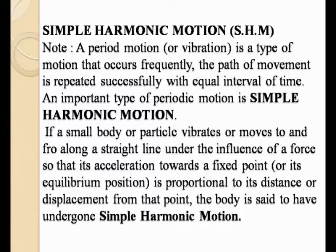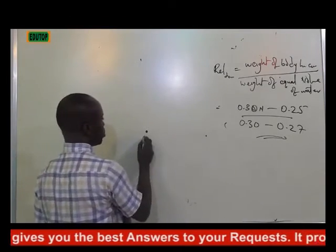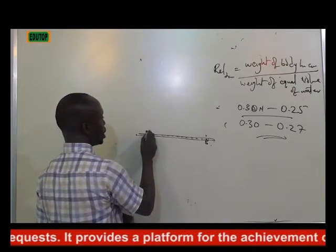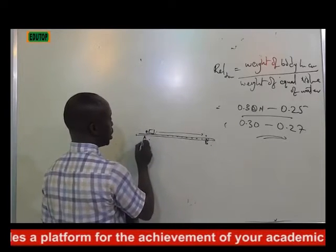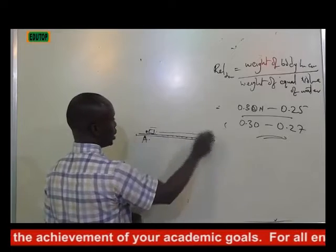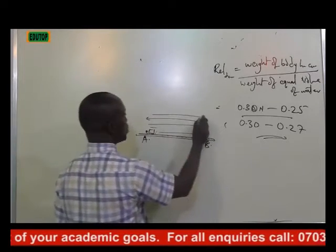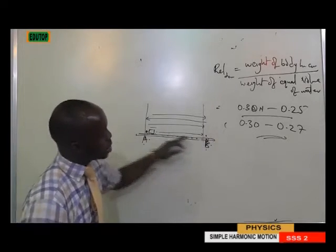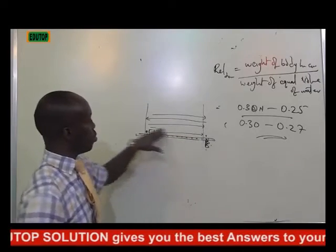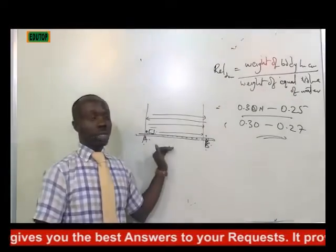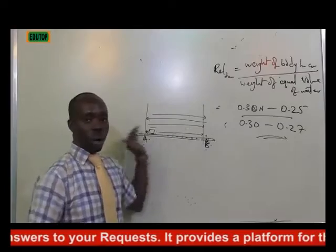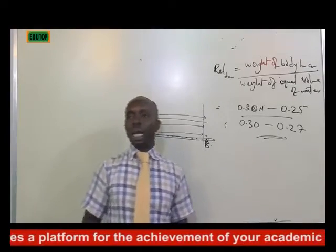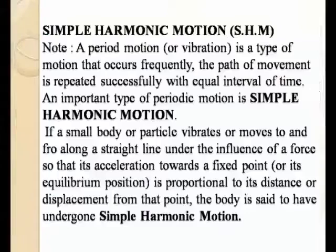When we say periodic motion, imagine points A and B. There is an object that moves from point A to point B and comes back easily — going this way and coming back, going and coming back, rotating between point A and point B. Because that object maintains the same distance and the same pathway of movement, that type of motion is what we call periodic motion.